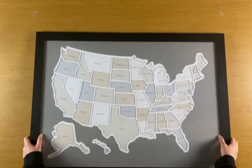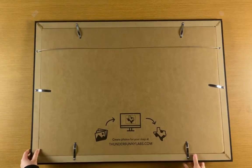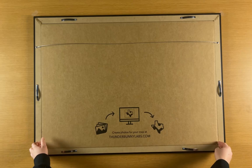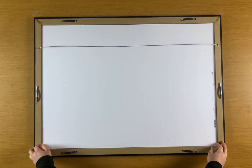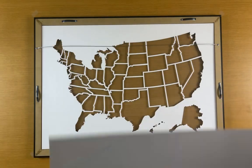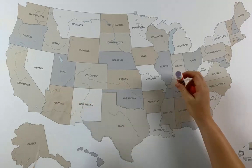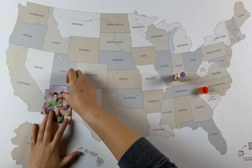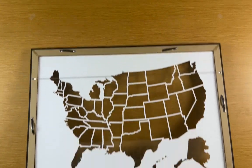Now we'll add photos to your map. Open all the screen clips. Remove the background piece from your map. Use glue or tape to stick each photo onto the background piece. Once you've added your photos, place the background piece back into the frame.